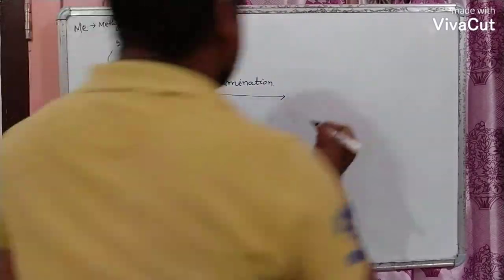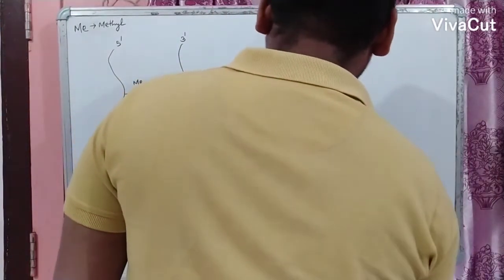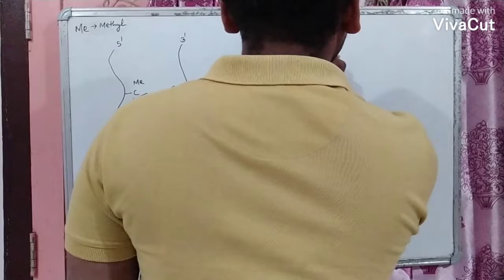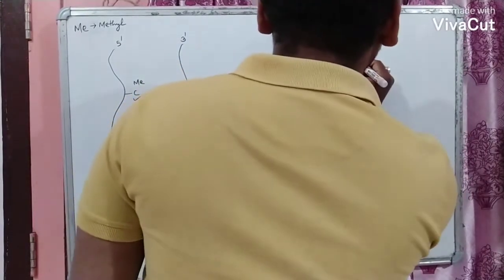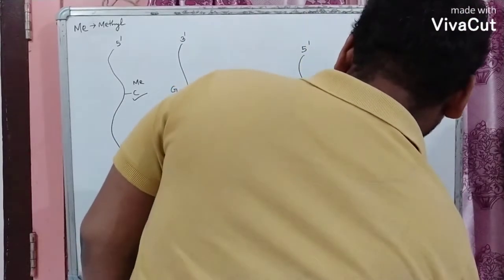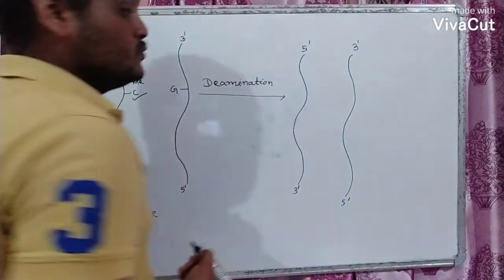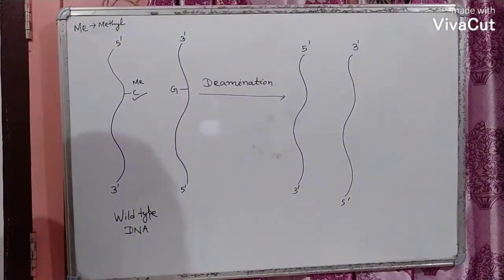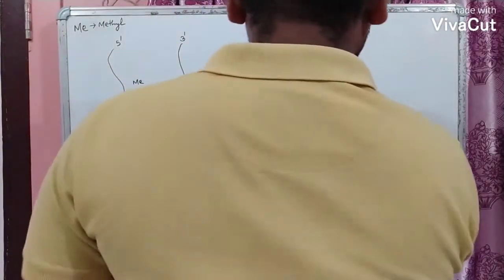the new strands will appear like this. This is the 5-prime, 3-prime, this is the 5-prime, 3-prime as these two strands are generally anti-parallel to each other.